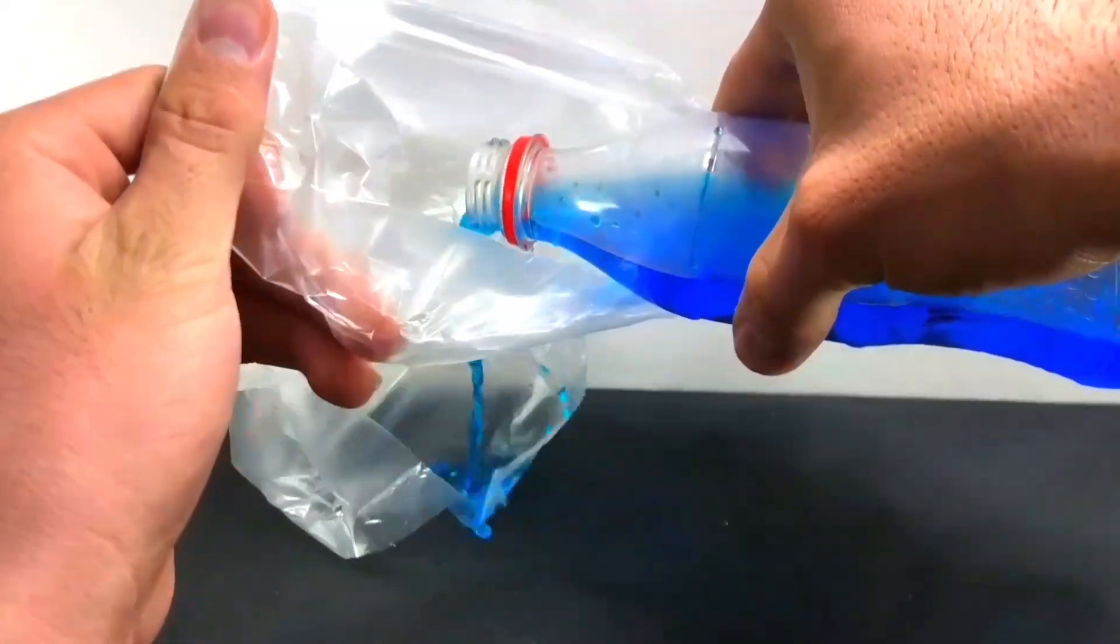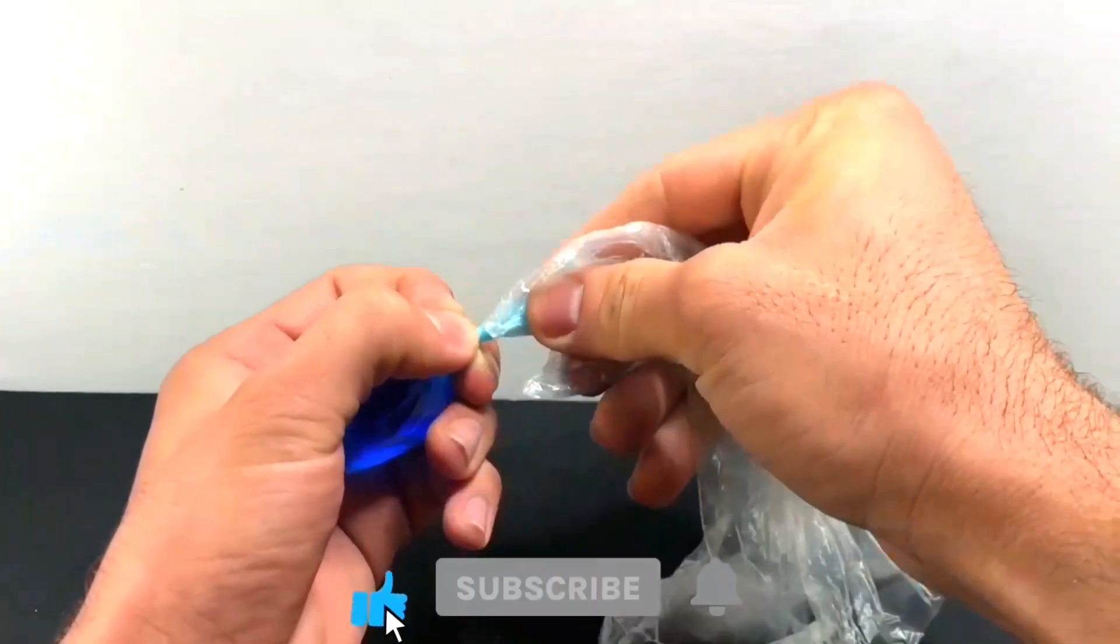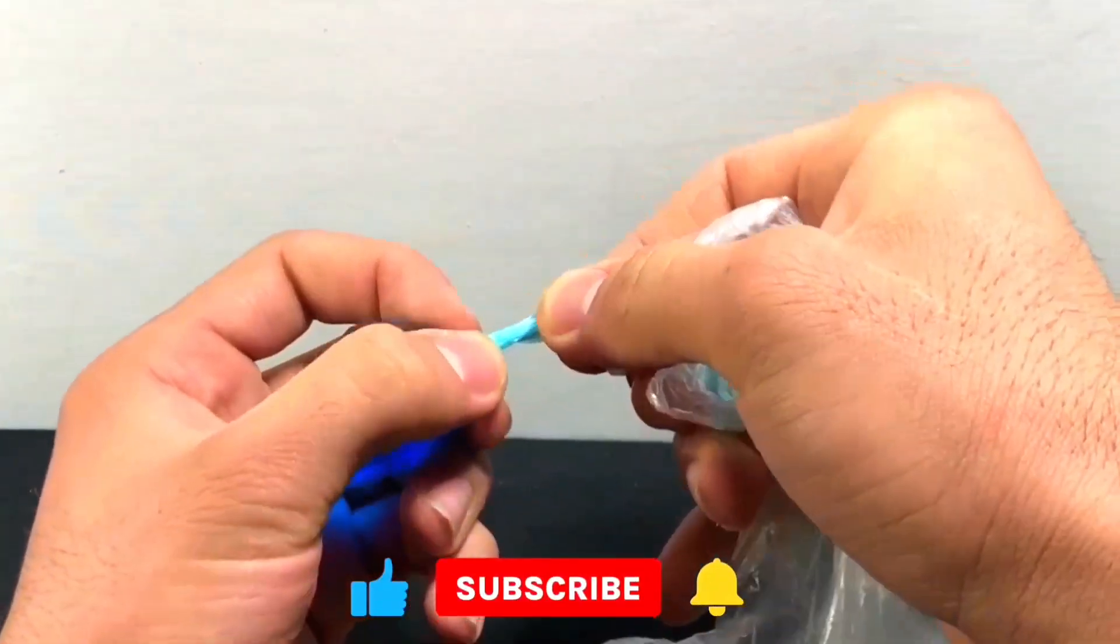Pour some colored water into the plastic bag and then tie the bag as shown in the video. Then cut the excess parts of the bag with scissors and then cut the bottom of the plastic bag with scissors.